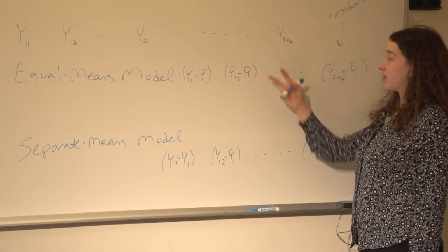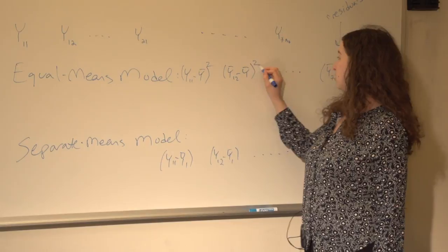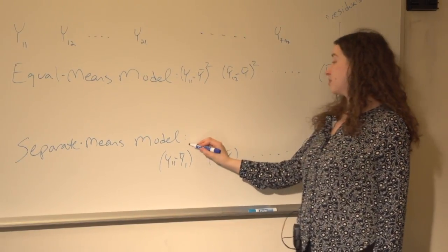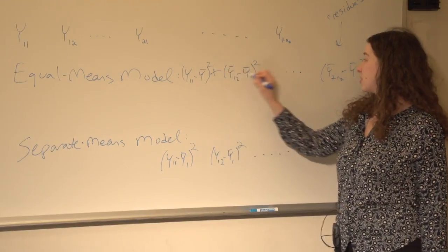What we do in order to summarize the residuals is we square them all. Why are we squaring them? Because otherwise when we add them up, we're going to get zero. We're going to square them, and then we're going to add them.